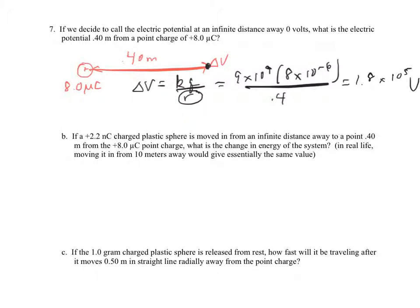And this is 1.8 times 10 to the fifth joules per coulomb or volts. So 180,000 volts when you're 40 centimeters away from an 8 microcoulombs charge. Now they say if a 2.2 nanocoulomb plastic sphere is moved from an infinite distance away to a point, 0.4 meters away, what is the change in energy of the system? So you're looking for delta UQ.